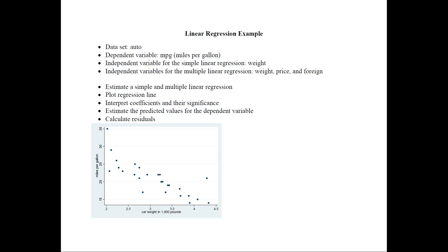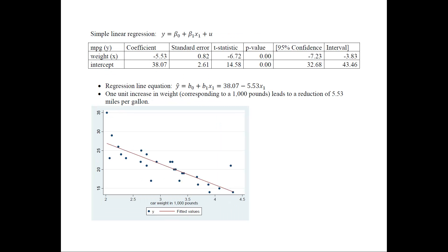Now we would like to estimate a simple linear regression model. This will be: y = β₀ + β₁x₁ + u. Here x₁ is the weight variable, the independent variable, and y is the dependent variable, miles per gallon. Once we estimate this model, this is the table that is typically provided by software packages.